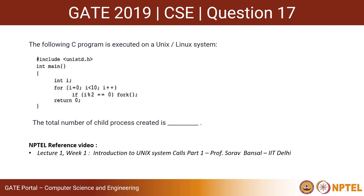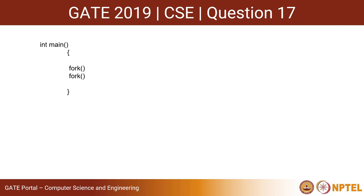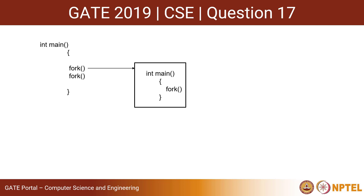To solve this question we first have to understand how a fork system call works and for how many fork calls there will be how many child processes created. Suppose we take this small example where there are two fork calls. The first fork call will create a child process which again contains a second fork call, and that fork call will again create a child process which does not contain any other fork call. So there will be two child processes created by the first fork call.